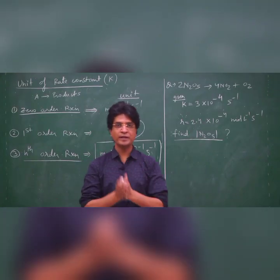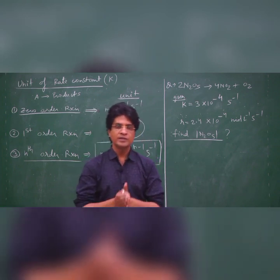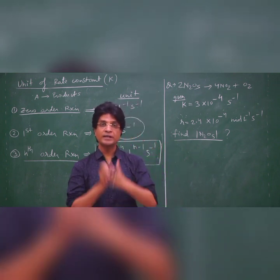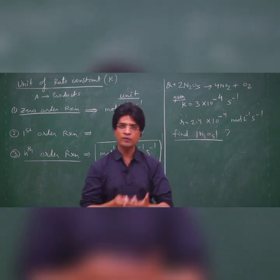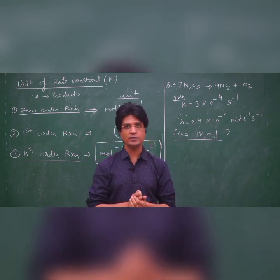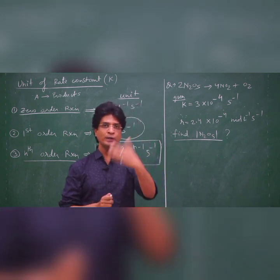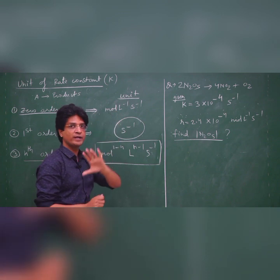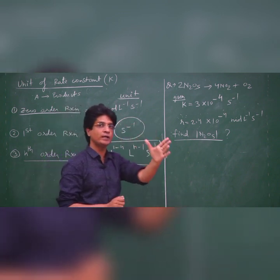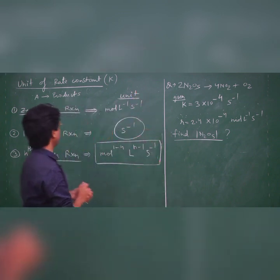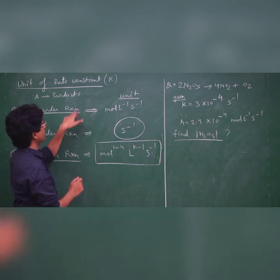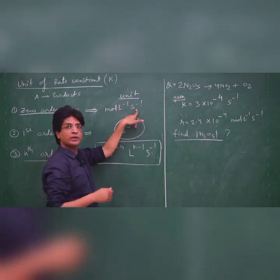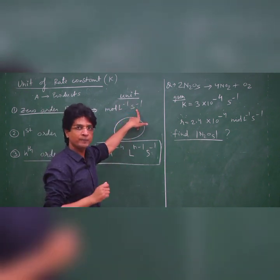Now let us come to a very important point: rate constant. In examinations, sometimes they do not give direct information about the order of reaction — you have to infer it from the units of rate constant. For zero order reaction, the unit of rate constant is moles per liter per second, which is also the unit of rate of reaction. For first order reaction — very important — the unit is per second, per minute, or per hour.